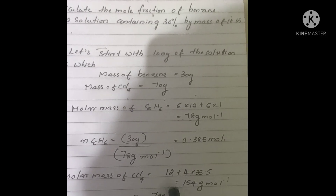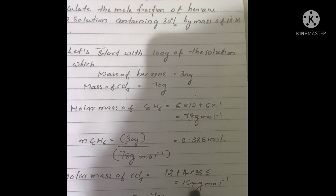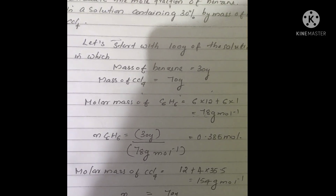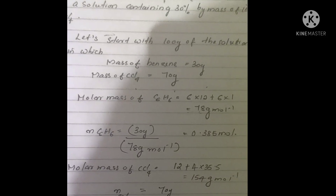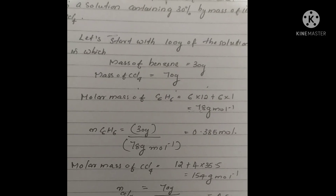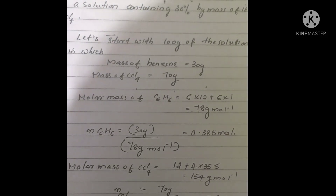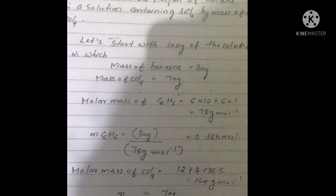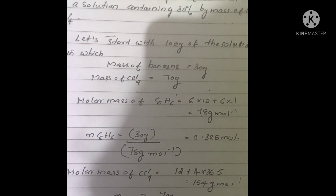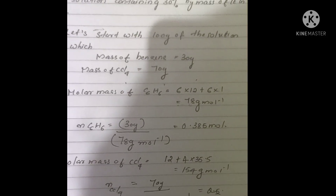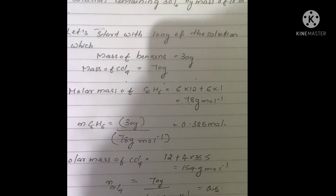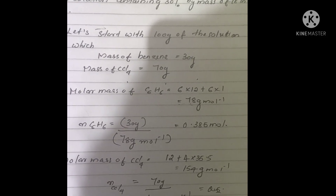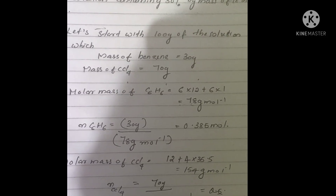Number of moles of carbon tetrachloride equals its mass, 70 grams, divided by molar mass, 154 grams per mole, giving 0.454 moles. Mole fraction of benzene equals moles of benzene divided by total moles of all components — that is NC6H6 plus NCCl4 — which equals 0.385 divided by (0.385 plus 0.454), giving 0.459. This is the mole fraction of benzene.